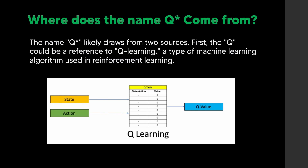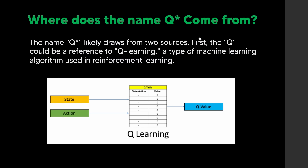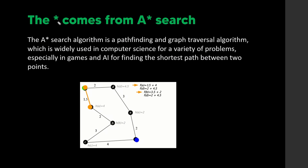What is Q-Learning, and where does the name Q-Star come from? The name Q-Star likely comes from two sources. The Q is a reference to Q-Learning, a type of machine learning used in reinforcement learning. The star comes from the A-Star search algorithm.